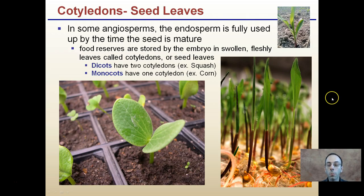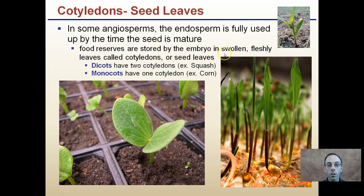Specifically, what monocot and dicot is referring to — or short for, I should say — is cotyledons. So monocotyledons or dicotyledons. Cotyledons is translated into meaning seed leaves. In angiosperms, the endosperm is fully used by the time the seed is mature, and food reserves are stored by the embryo in swollen, fleshy leaves called cotyledons, or seed leaves.